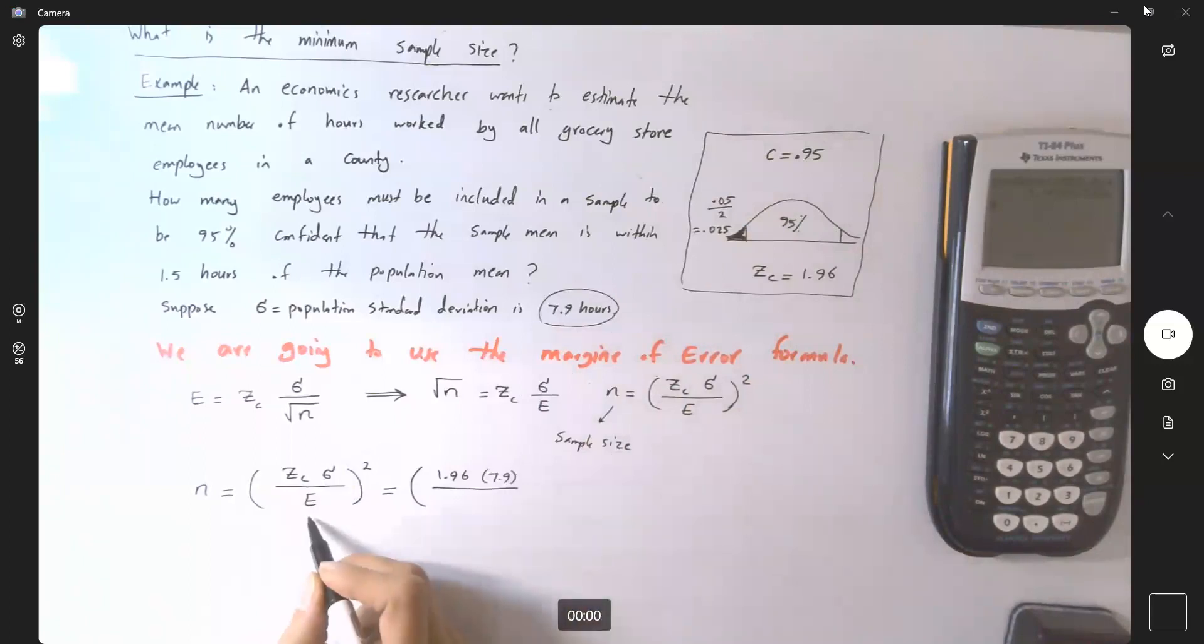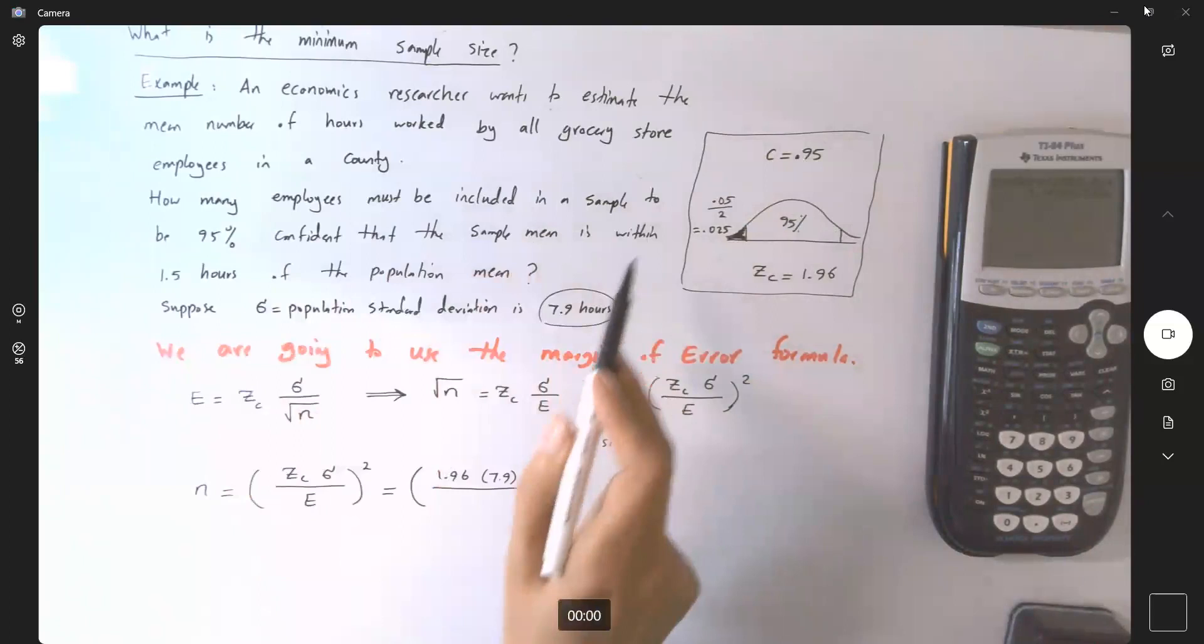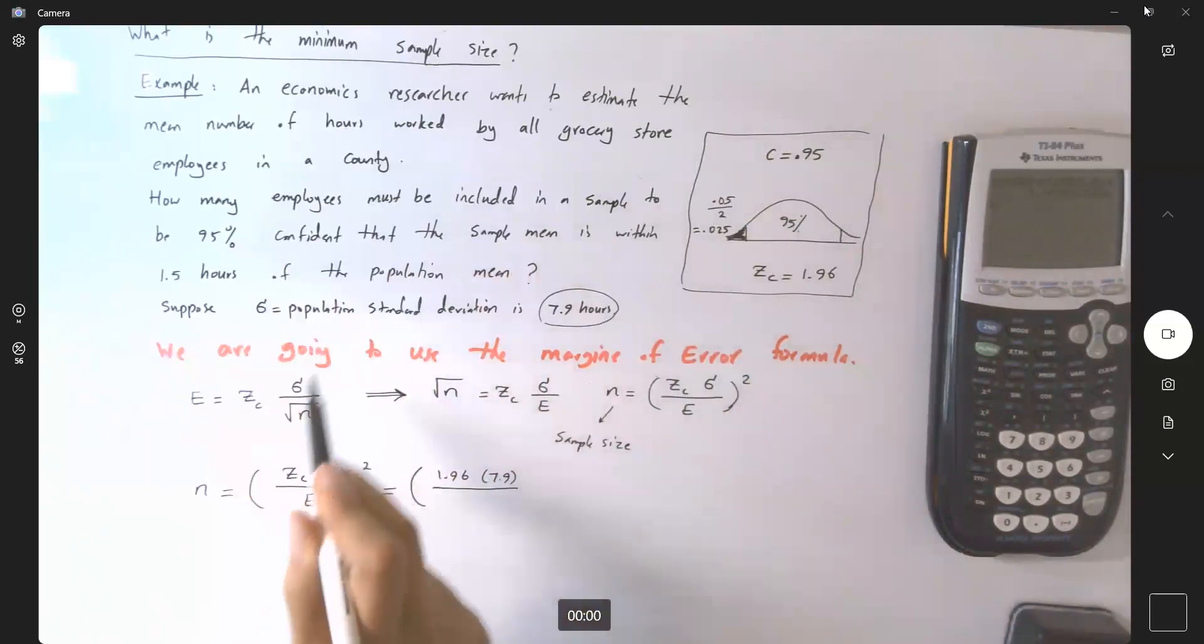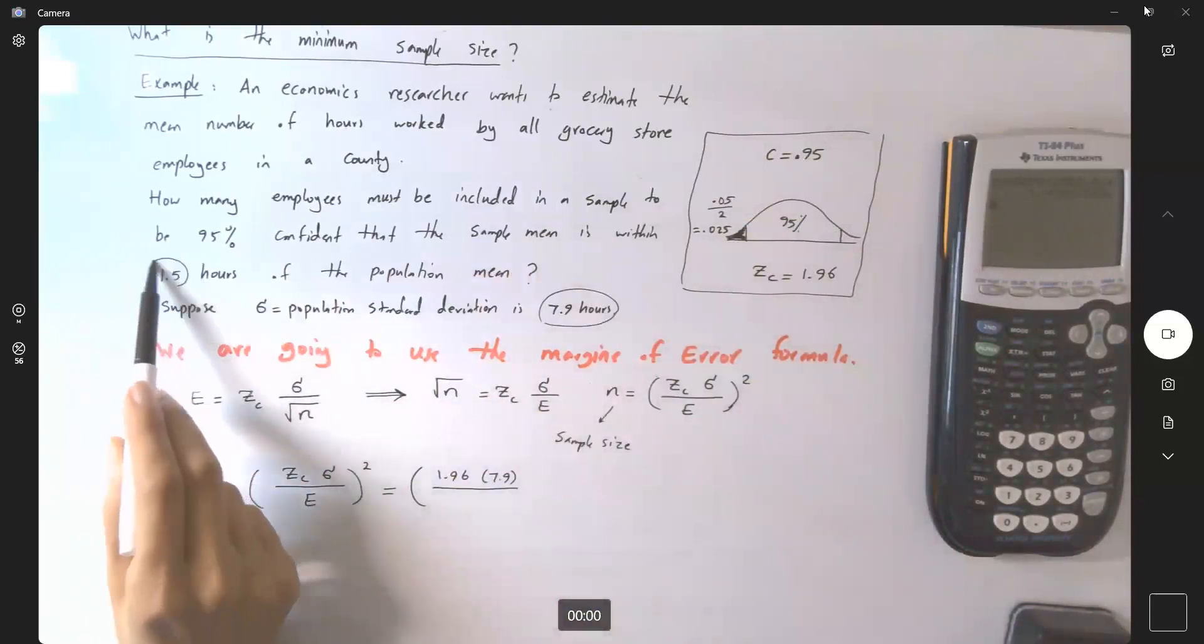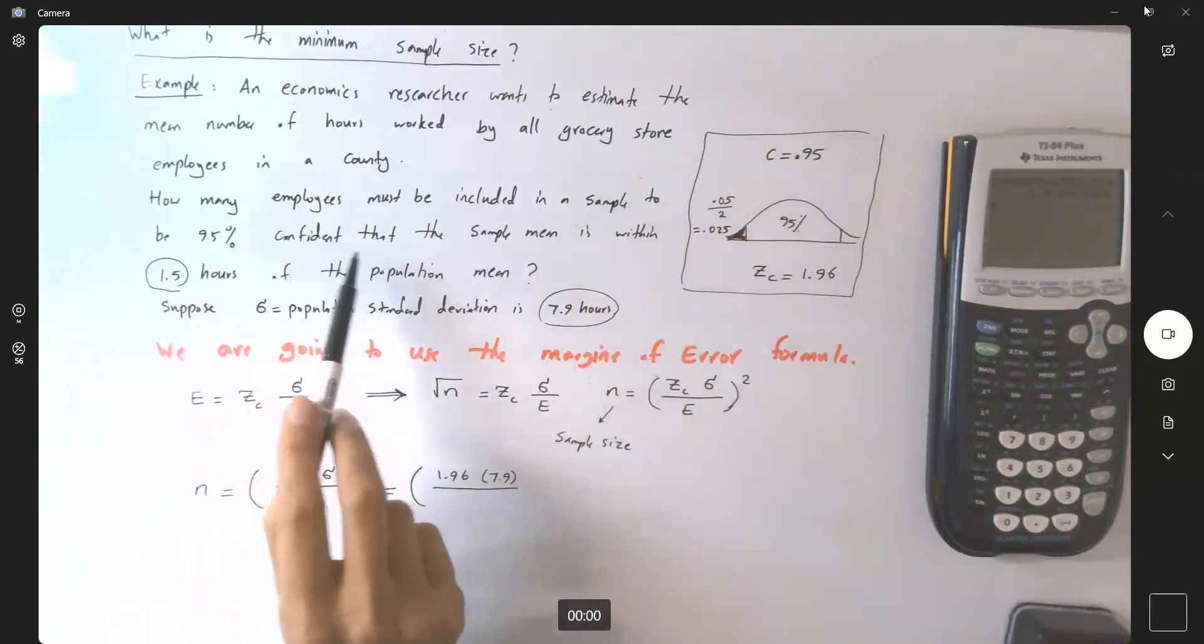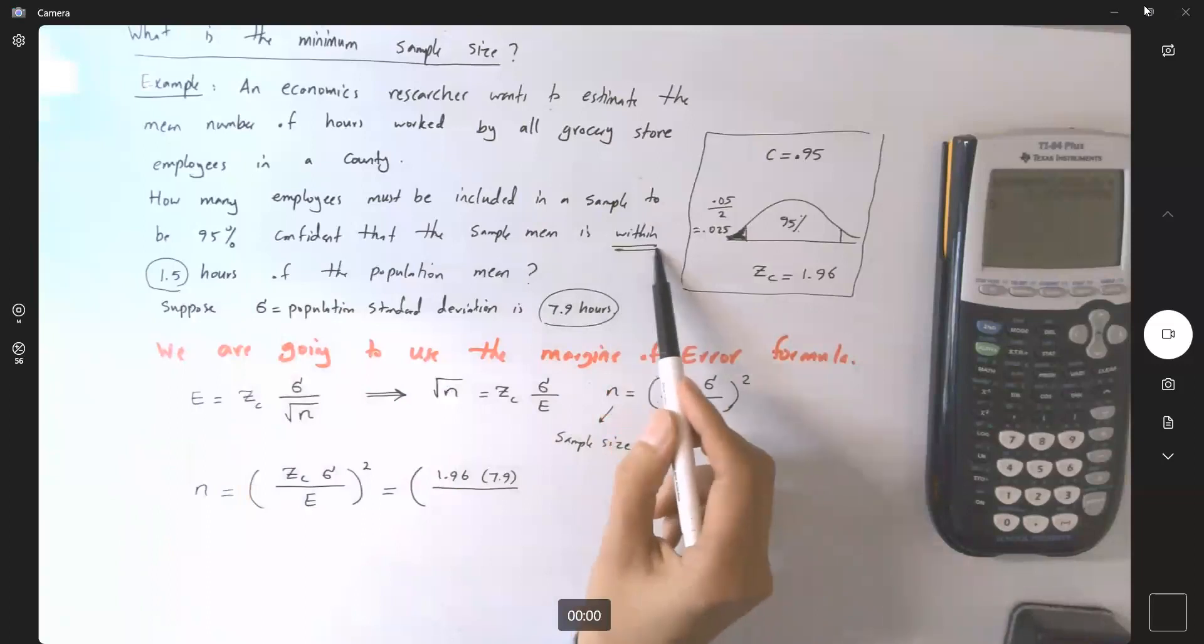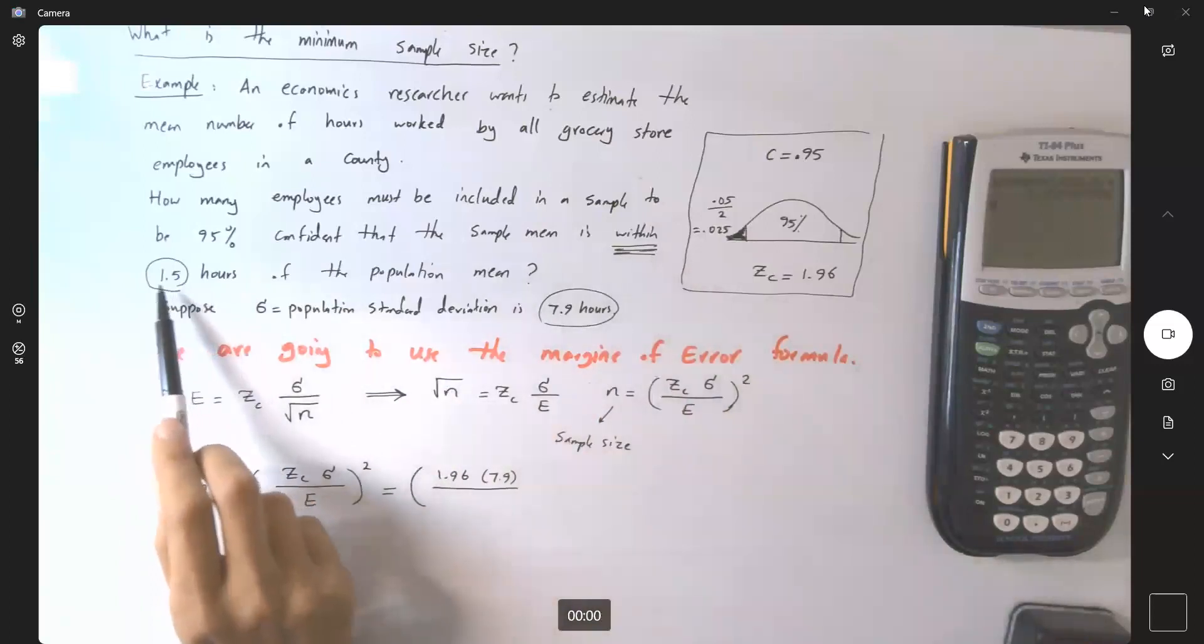divided by e. e is the margin of error. But where is my margin of error? I don't see any margin of error here in this question. Well, you have 1.5 hours. The sample mean is within 1.5 hours, within 1.5 hours refers to your margin of error.